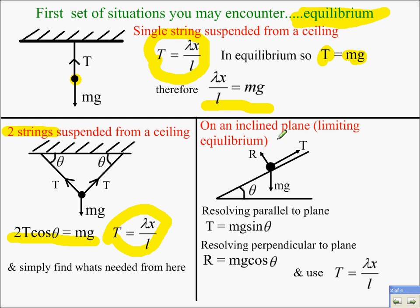Third situation, on an inclined plane. So we have resolving, it's sensible in this case to resolve parallel and perpendicular to the plane. So resolving parallel to the plane, we have T is Mg, the component of weight down the plane is sin theta.